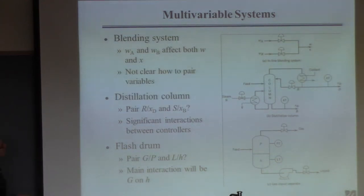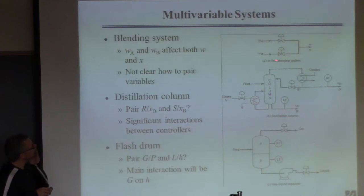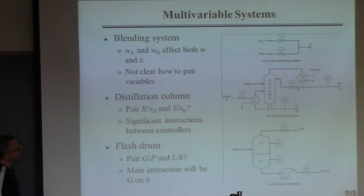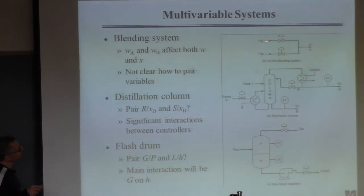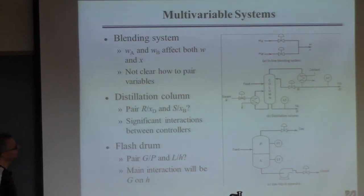Here are a couple of examples. The first is particularly simple: blending two streams to get a desired total flow rate and desired mass fraction of one component. If I asked which inlet flow — pure A or pure B — should control total flow and which should control composition, the answer is I have no idea, at least that would be my feeling.